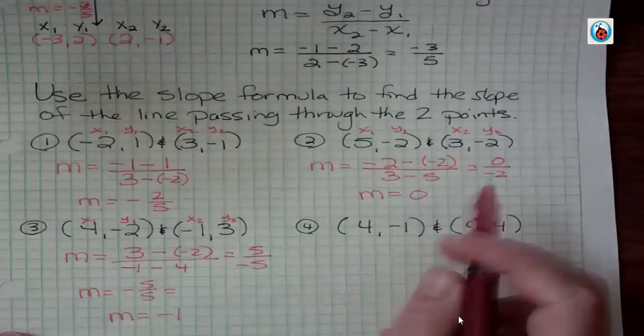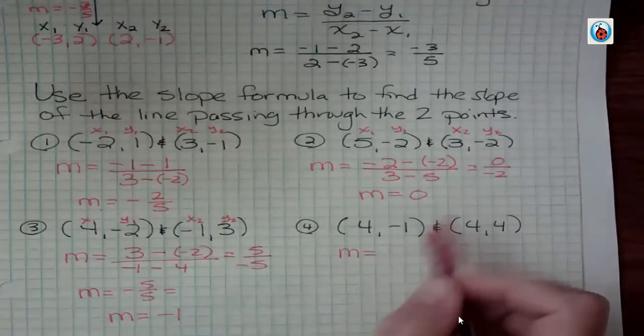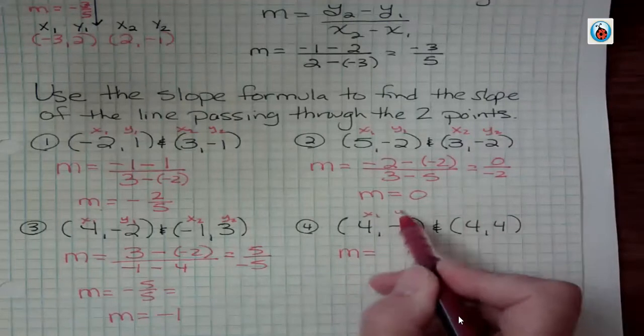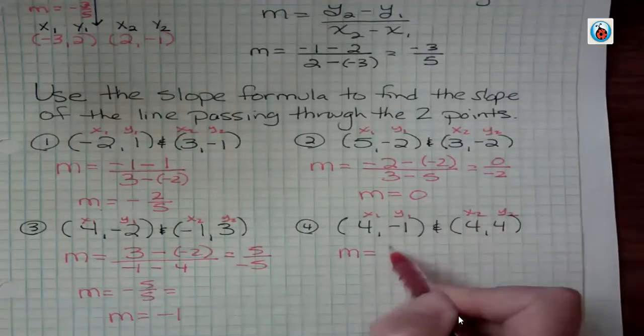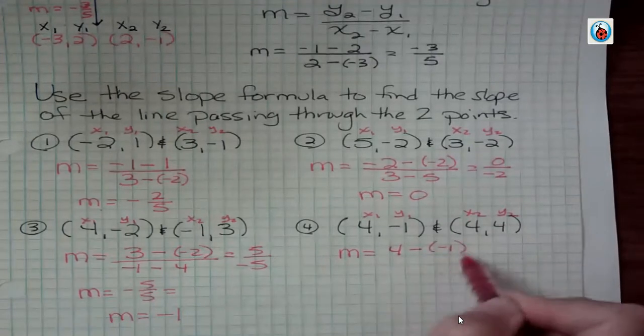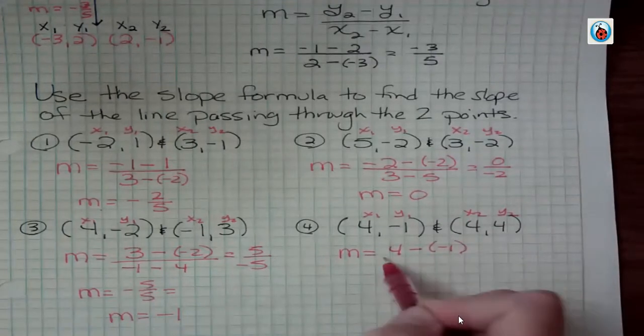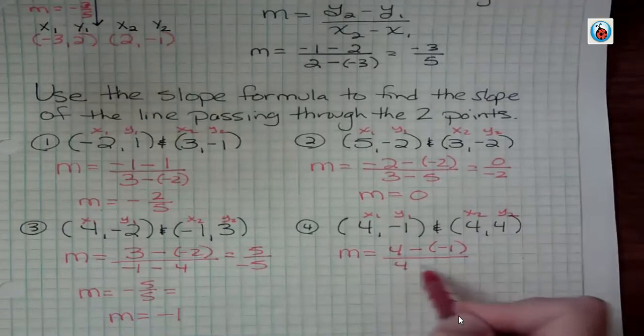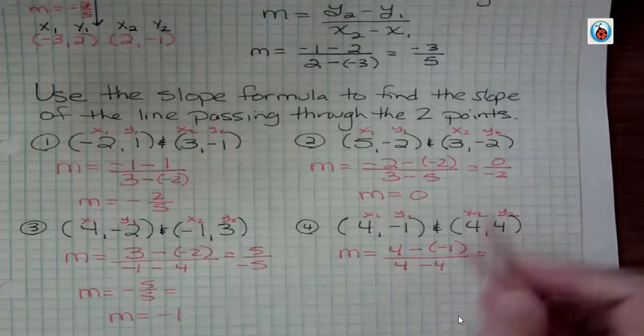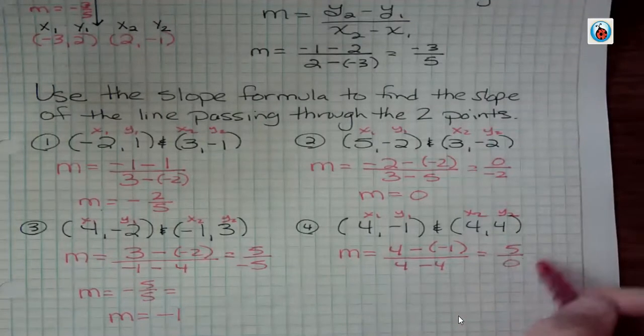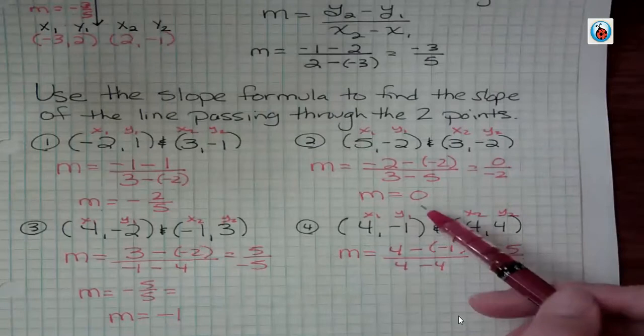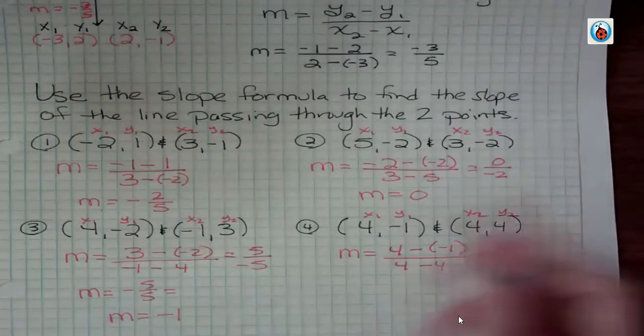In the last one, let me label them. y sub two is four, y sub one is negative one. There's a minus sign in between. x sub two is four, minus four. That's four plus one, which is five, and four minus four, which is zero. That's different than what happened up here. Here, our numerator was zero, which gives us zero. Here, our denominator is zero. So this slope is undefined. Sometimes you'll hear it said there is no slope.